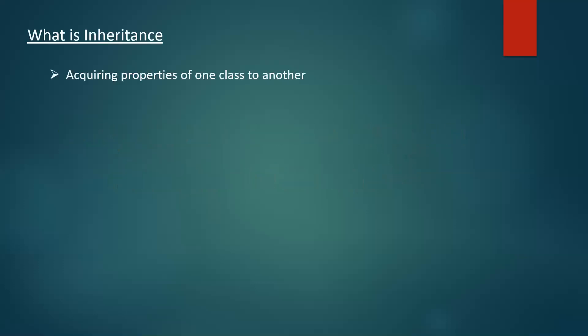First, let us understand what inheritance is. Acquiring properties of one class to another is what we call inheritance. Properties here are the combination of data members and methods. If we define some properties in one class and want to reuse them in another class, we inherit those properties. The class in which properties are defined is called a parent class or super class, and the class which is acquiring the properties is called a child class.